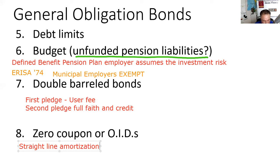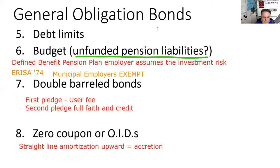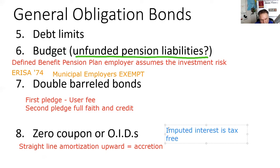What makes a municipal zero-coupon bond unique: with other issuers, the imputed interest you're receiving is taxable. But because the issuer here is a municipality, the imputed interest is tax-free — which is unique. With corporate or government zero-coupons, you'd be paying taxes on money you're not actually receiving, phantom income. But with a municipal zero-coupon, the imputed interest is part of your tax-free return.